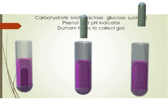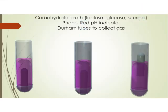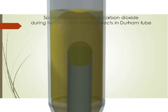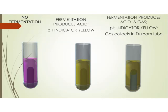A number of tests probe for a microbe's ability to ferment a specific carbohydrate, such as sucrose, lactose, glucose, or maltose. The sugar is placed in a broth with the pH indicator phenol red. If the microbe can ferment the sugar, acidic byproducts are produced and the pH change will turn the solution yellow.